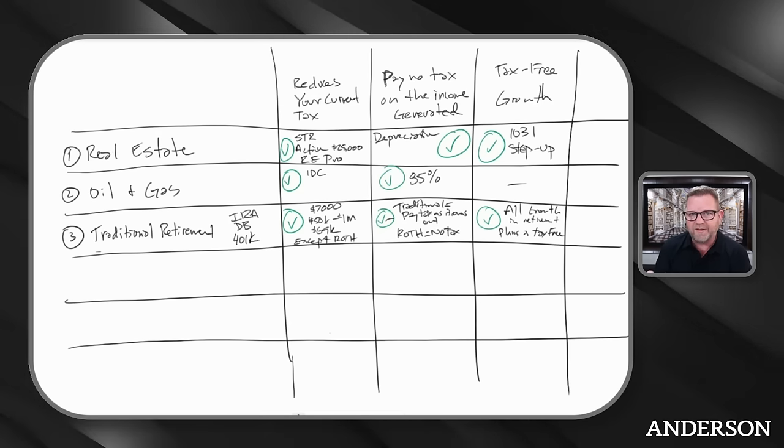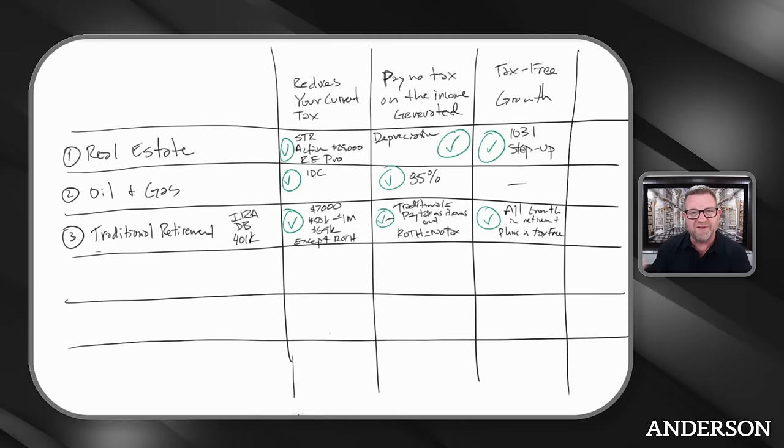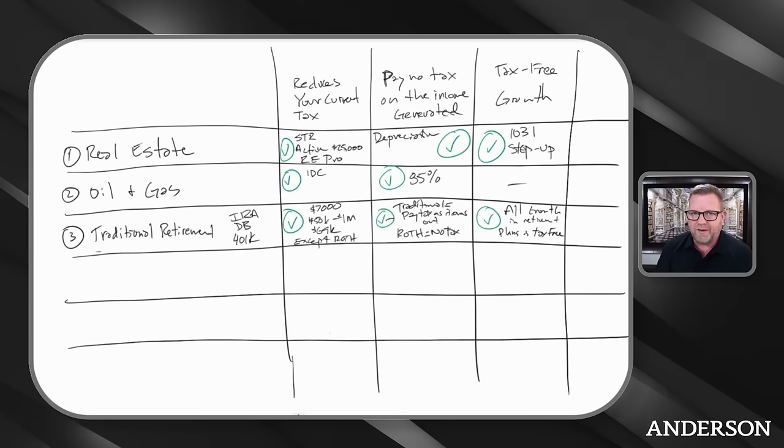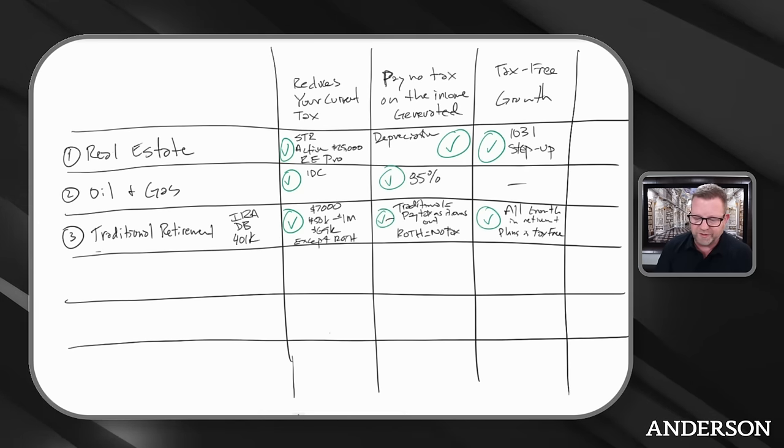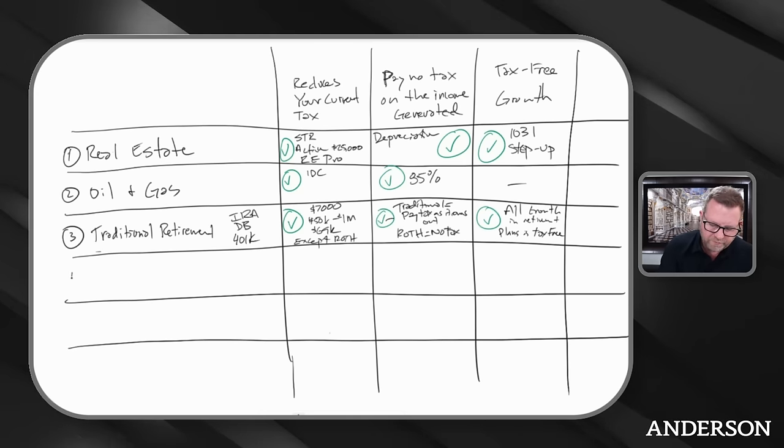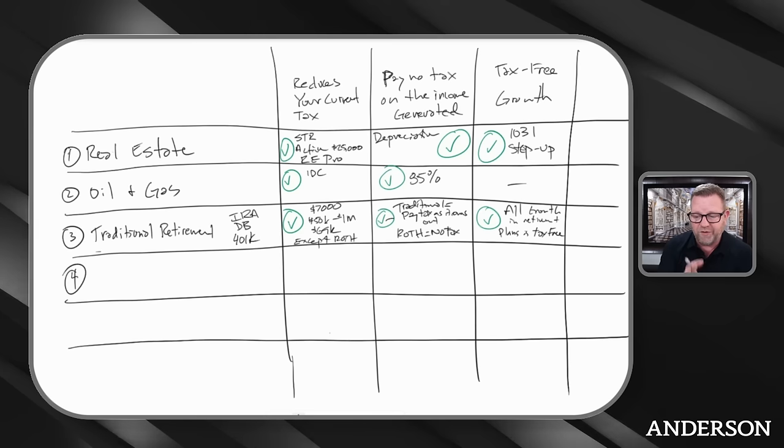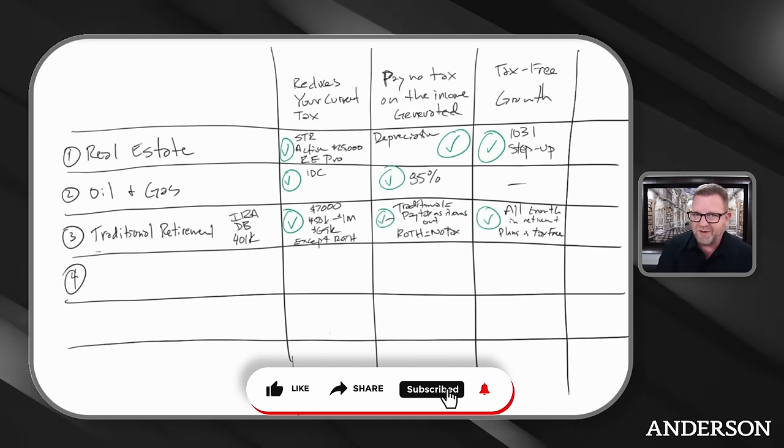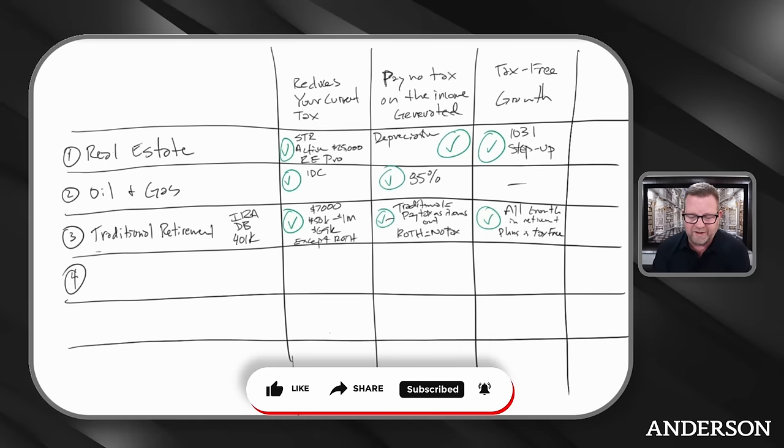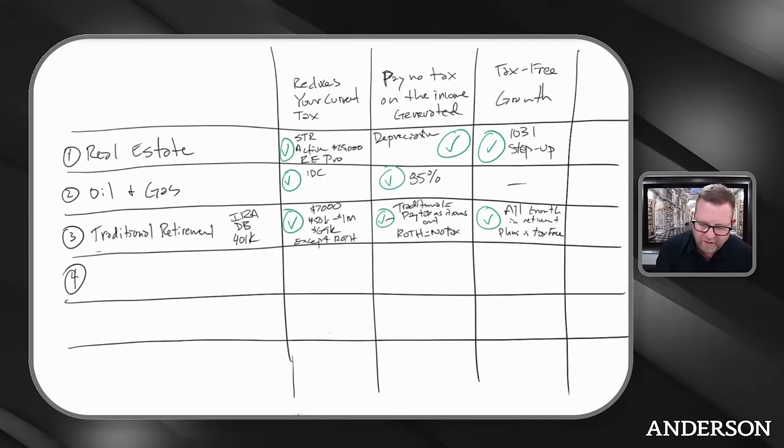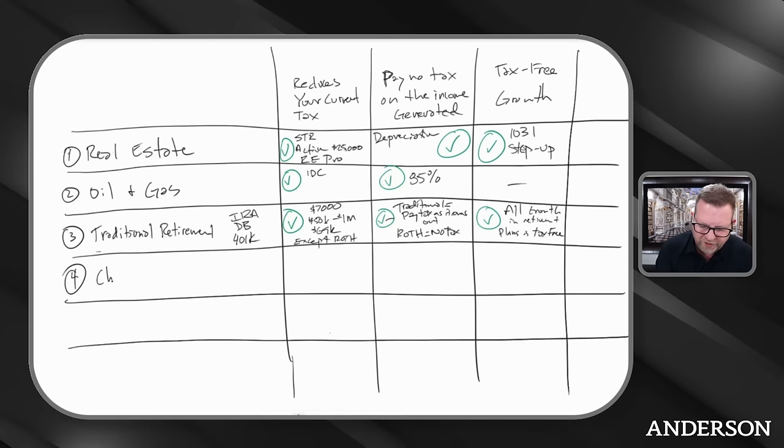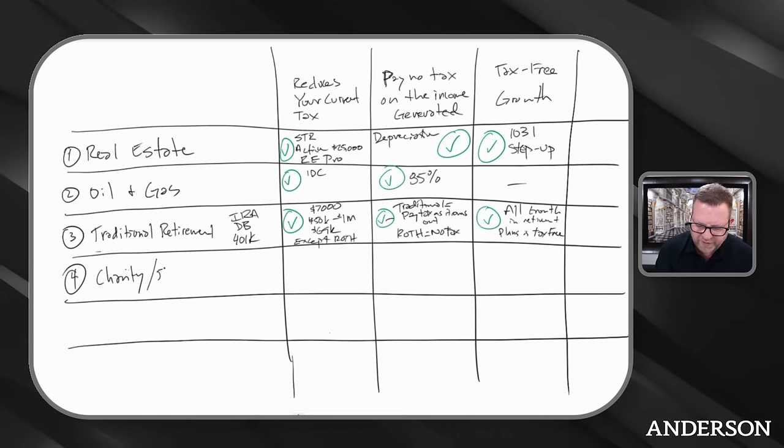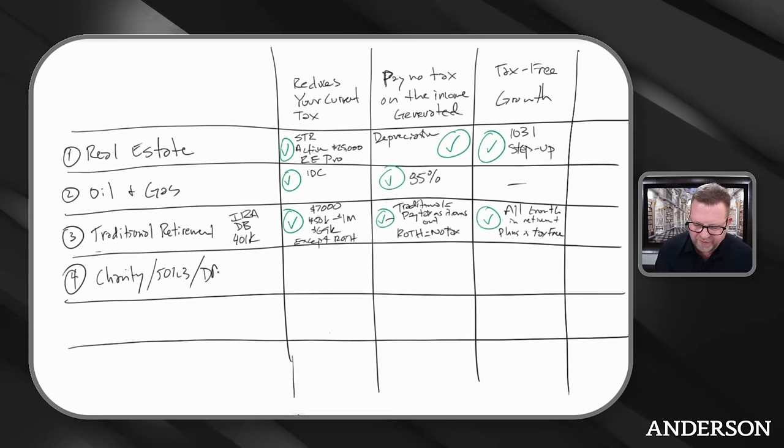The only time you pay tax on a traditional plan is when it comes out. You have to start taking required minimum distributions. If you're in a Roth, you never have to pay. Number four, this would be charities, which is a 501c3 or a donor advised fund.